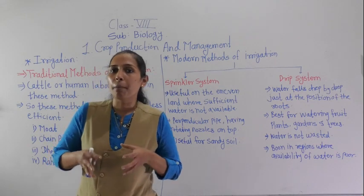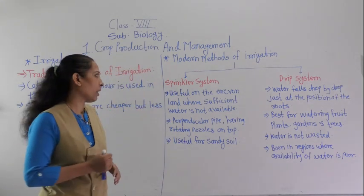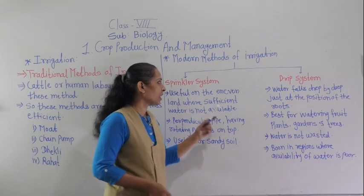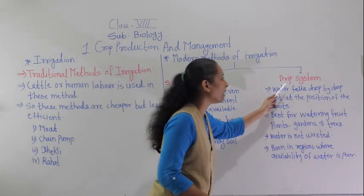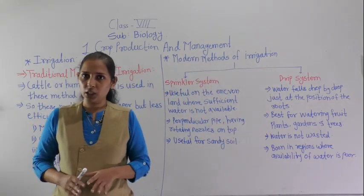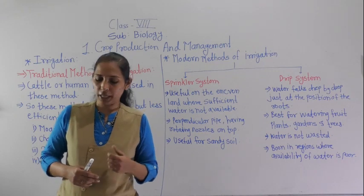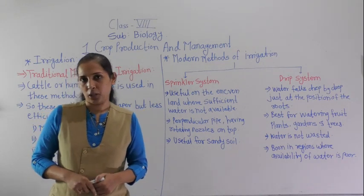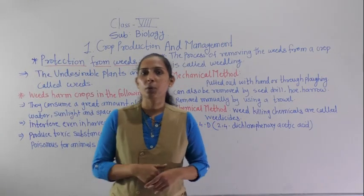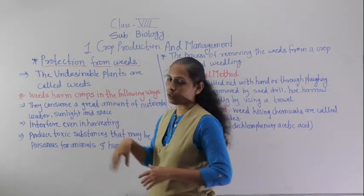So these are the two main modern methods of irrigation: the sprinkler system and the drip system. This is all about irrigation. Now we will move to the next point, that is crop protection, specifically protection from weeds.